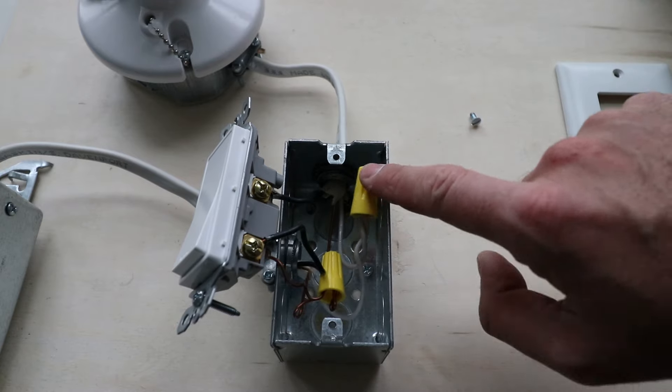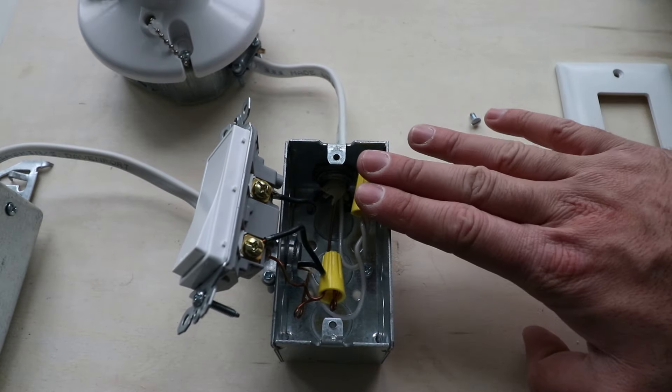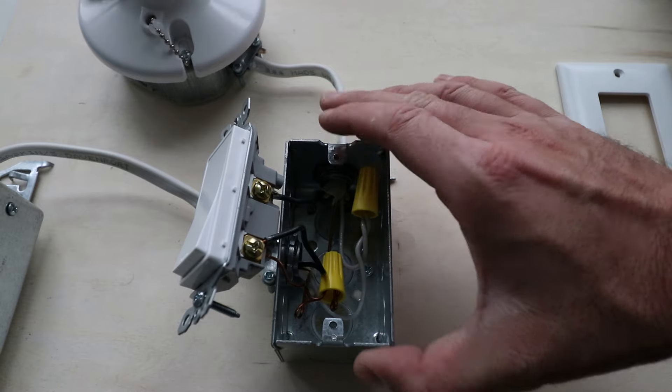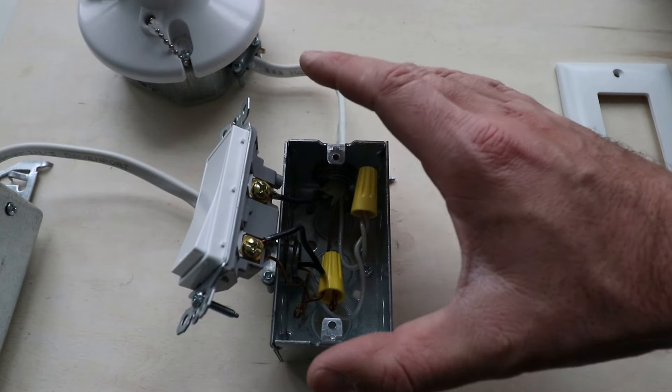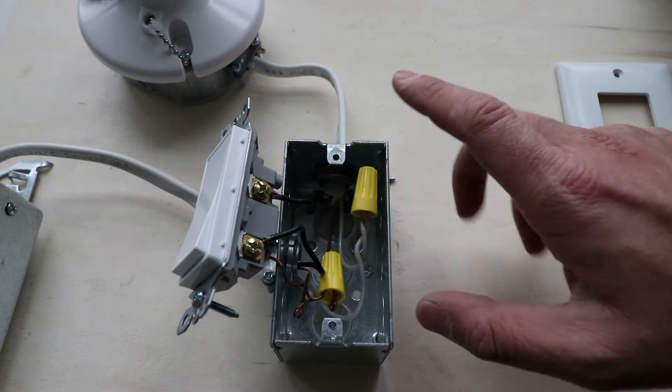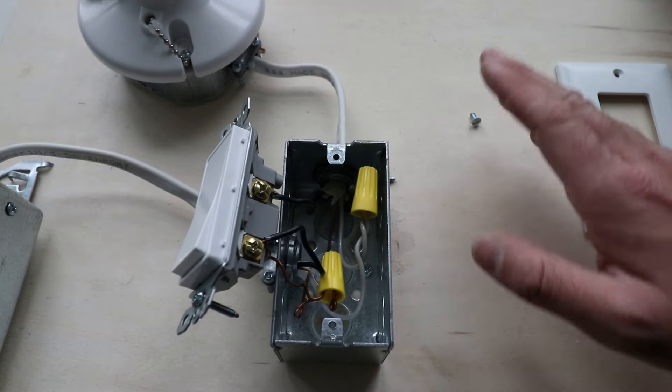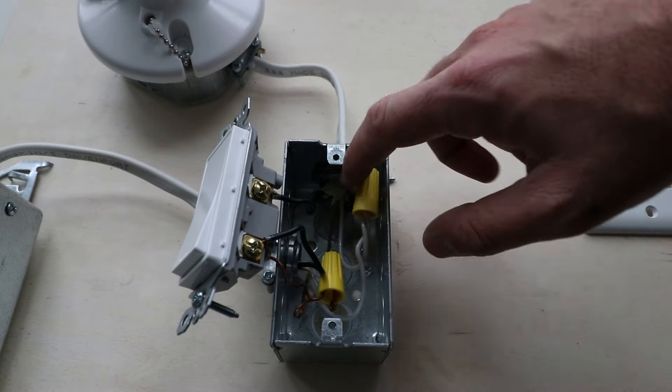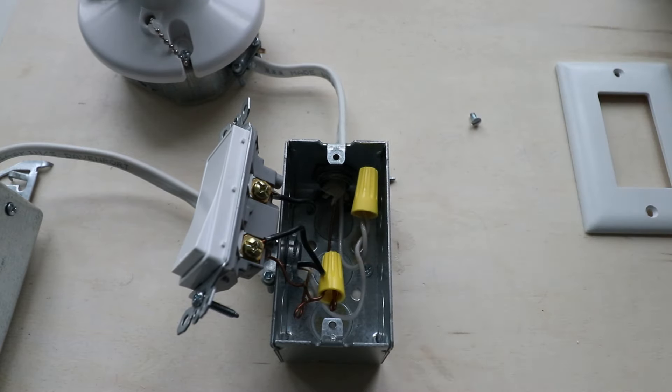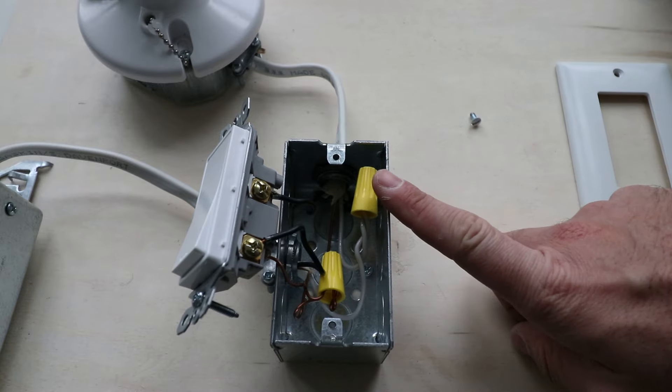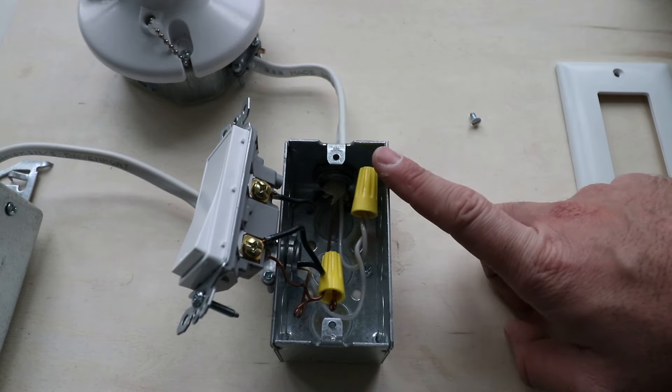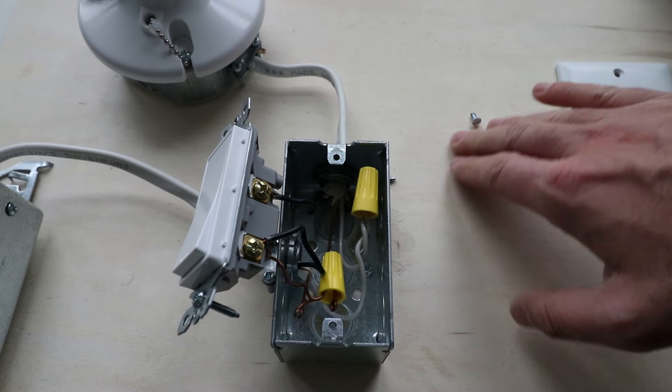But in newer homes, typically I'd say built after like 1985, you are going to find a neutral wire in the switch box because that is typically required per code. In older homes, you may have it or you may not have it. But you don't need a neutral wire for most light switches. You only need a neutral wire if you plan on installing a smart switch, but not all of them require it.